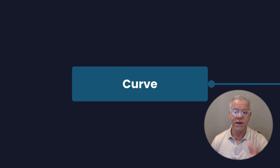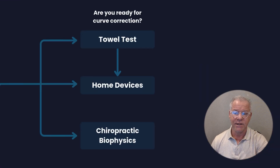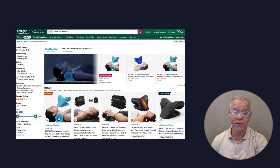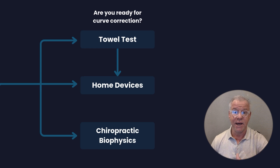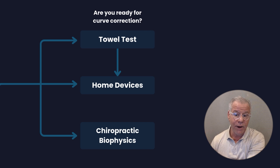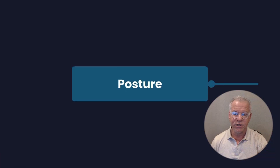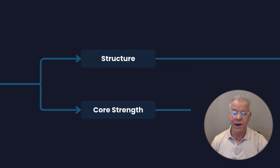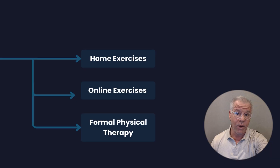On curve correction, start with a simple towel test — I'll get into that in the deep dive video. You can use home devices to try to improve the curve, or you can try chiropractic biophysics, starting with the simplest and moving up as you tolerate it. Everything follows that same pathway we discussed in part one, threading the needle. Finally, for posture, you can look at overall structure and core strength. Start with home exercises, then move to more formal online exercises or formal physical therapy.